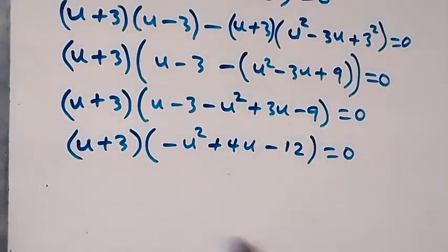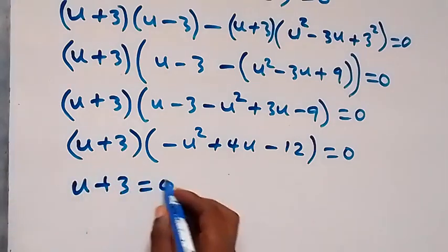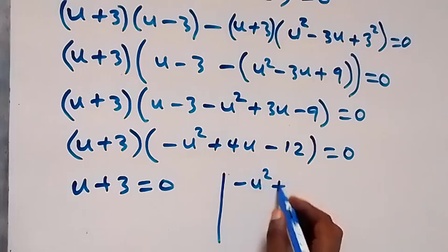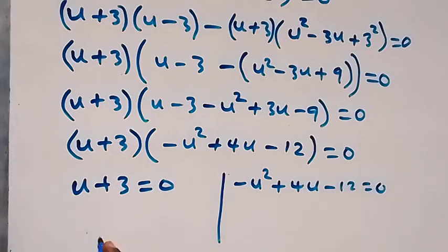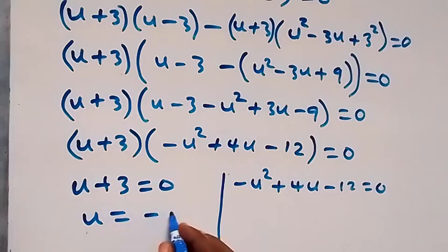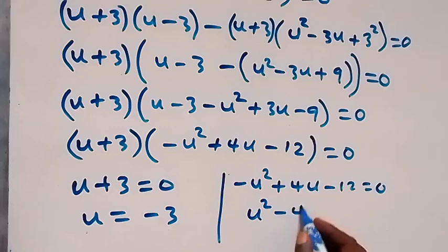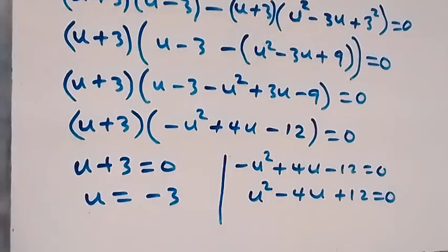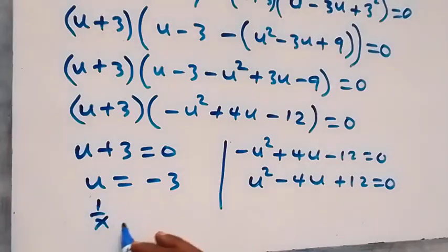From here we have two possible cases: u plus 3 equals zero, or minus u squared plus 4u minus 12 equals zero. Multiplying through by minus 1 gives u squared minus 4u plus 12 equals zero.